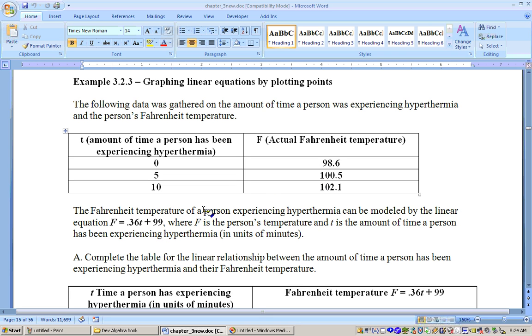These are the actual values, and we're going to use this model here to see how good this model is in terms of graphing this relationship between time and a person's Fahrenheit temperature. I'm going to use these same points here to substitute into here to get out the predicted Y values, which is the person's Fahrenheit temperature, and then I'm going to graph that line.